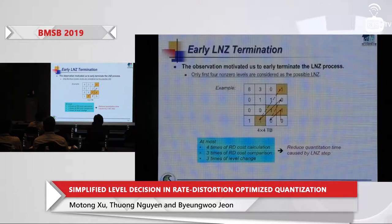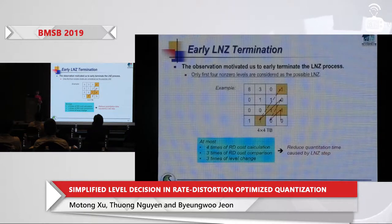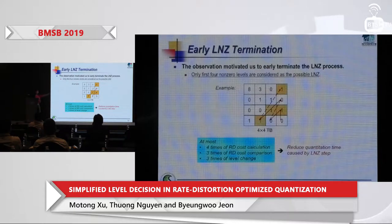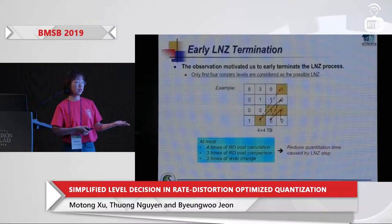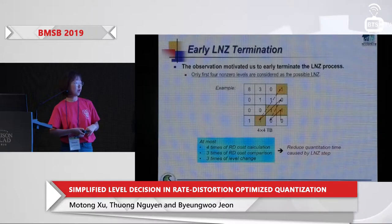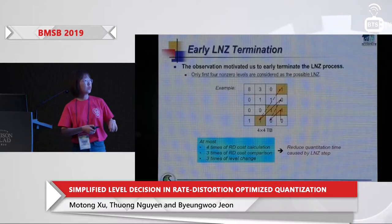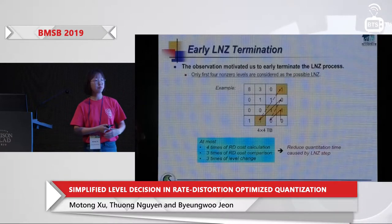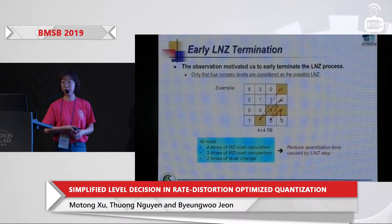From this observation, we propose to early-terminate the LNZ process by considering only the first four non-zero levels as possible LNZ candidates. Only those levels (shown as yellow in the example) are considered, so RD cost calculation and comparison occur only between these levels — at most four RD cost calculations, three comparisons, and three level changes. We skip RD cost calculation for all remaining levels, reducing quantization time.